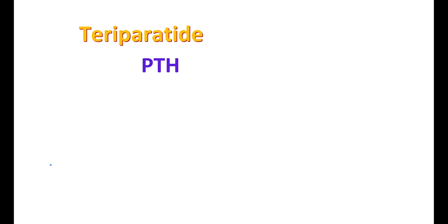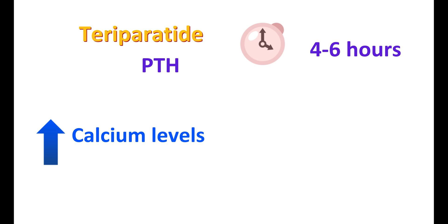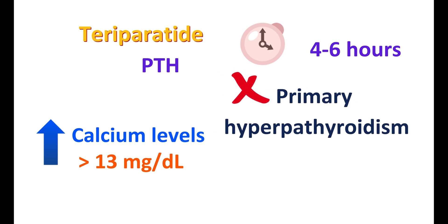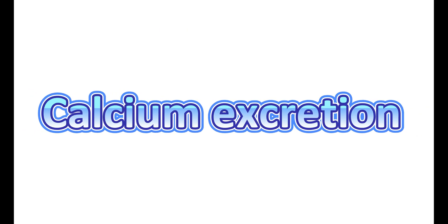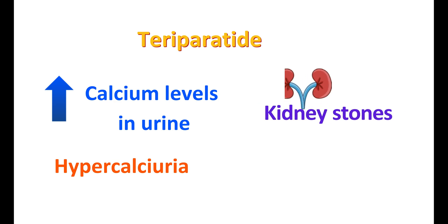Teriparatide acts like parathyroid hormone and can increase serum calcium levels through increased calcium release from bones and increased calcium absorption in the distal tubule. This effect is transient and occurs within four to six hours after injection. In some people, calcium levels may rise above 13 mg/dL, remaining elevated until they normalize after 16 to 24 hours. Due to this calcium elevation, teriparatide is not recommended in people with primary hyperparathyroidism, and elevated calcium can interact with medications like digoxin. Teriparatide can also increase urinary calcium, causing hypercalciuria and increasing the risk of kidney stones in susceptible individuals.